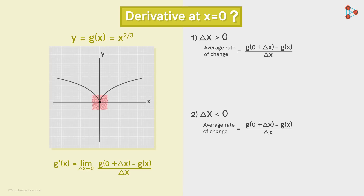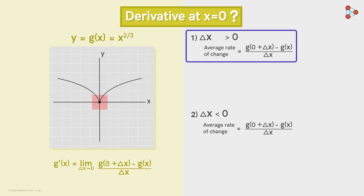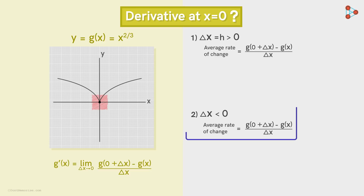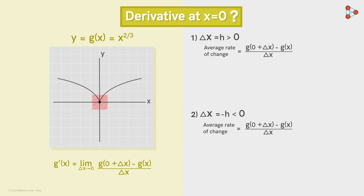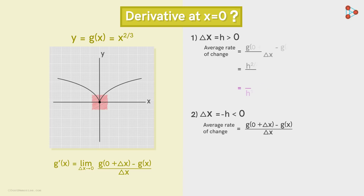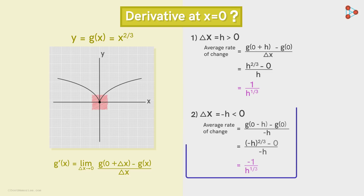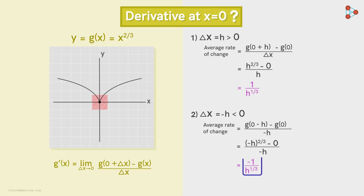Let's look at the calculations quickly. In the first case, let delta x be equal to h, and in the second case, negative of h. In both cases, h is a positive number. If we calculate the average rate in the first case, we get that to be equal to 1 over h raised to the power 1 over 3. We proceed in a similar way for the second case, where it will be equal to negative of 1 over h raised to the power 1 over 3.